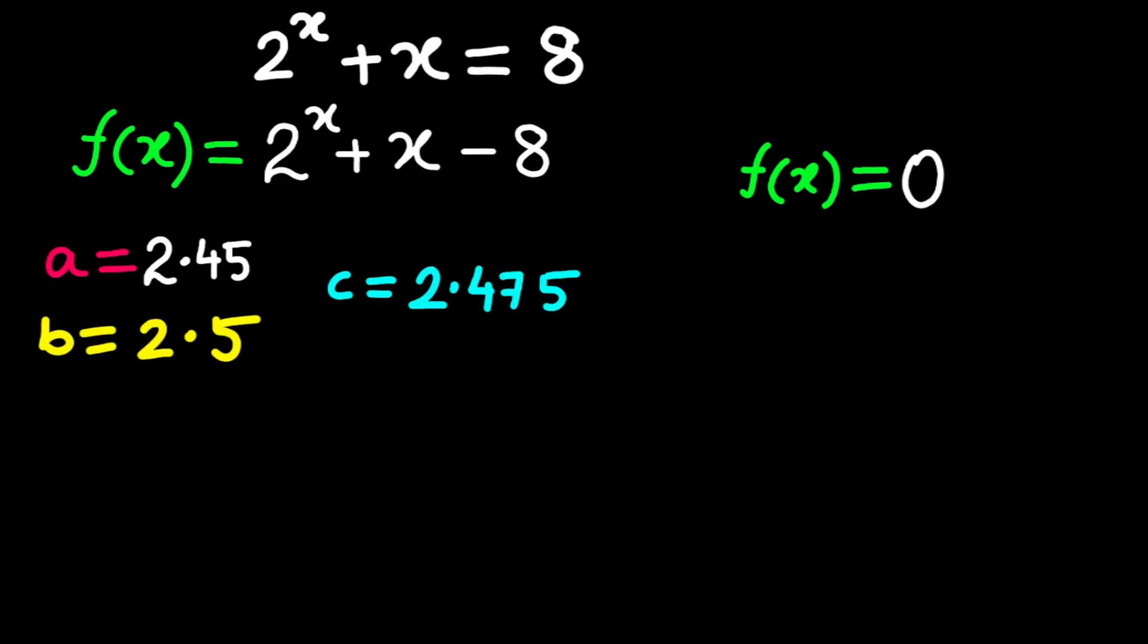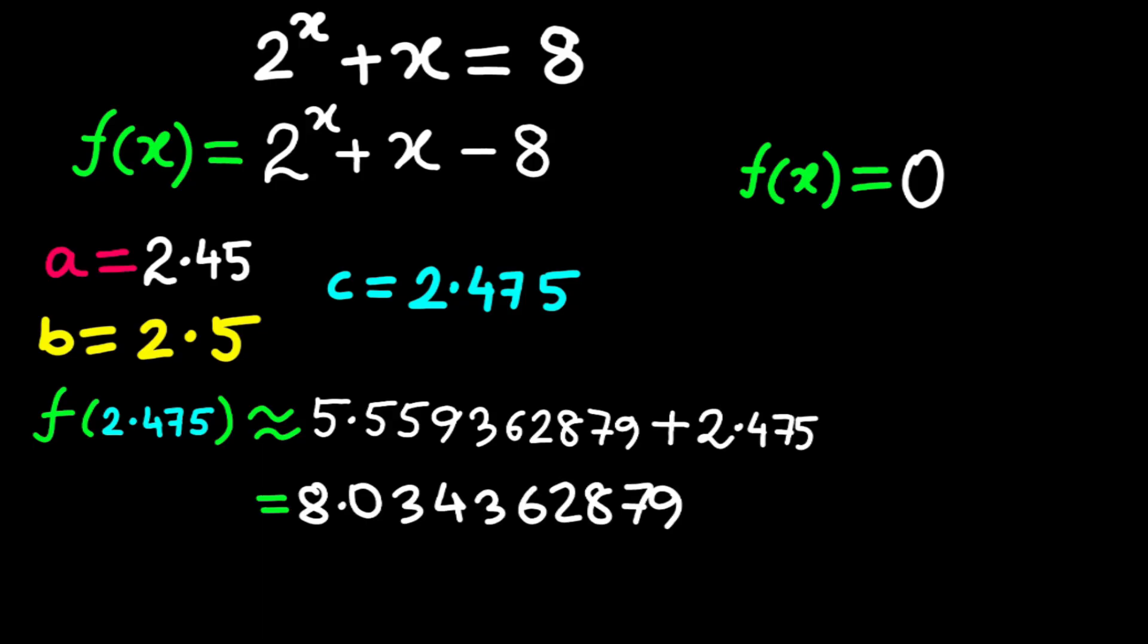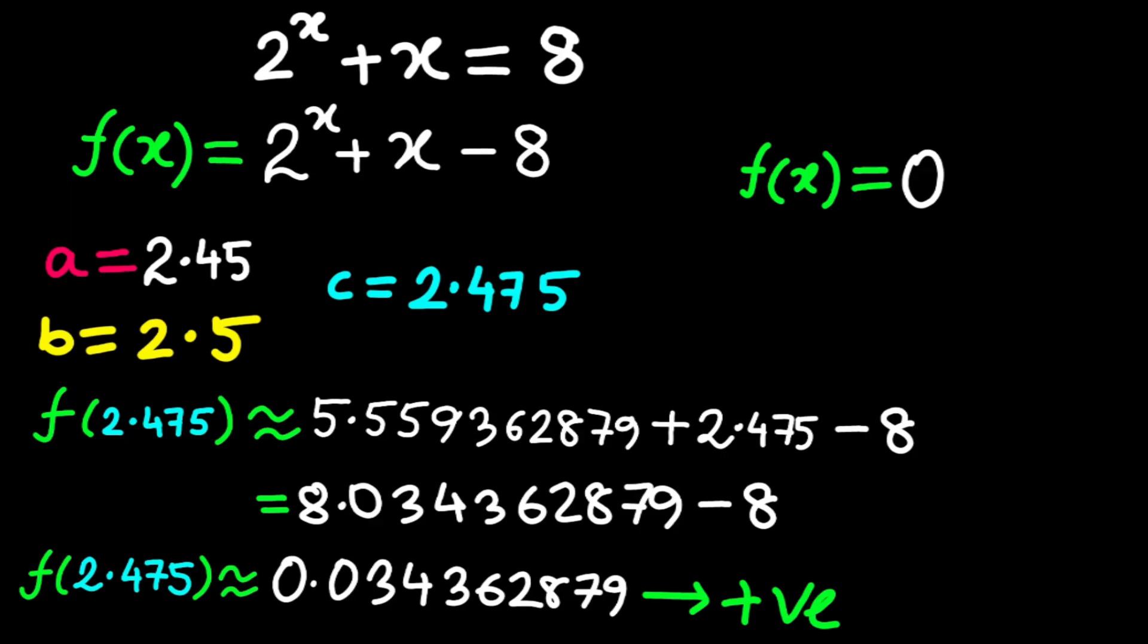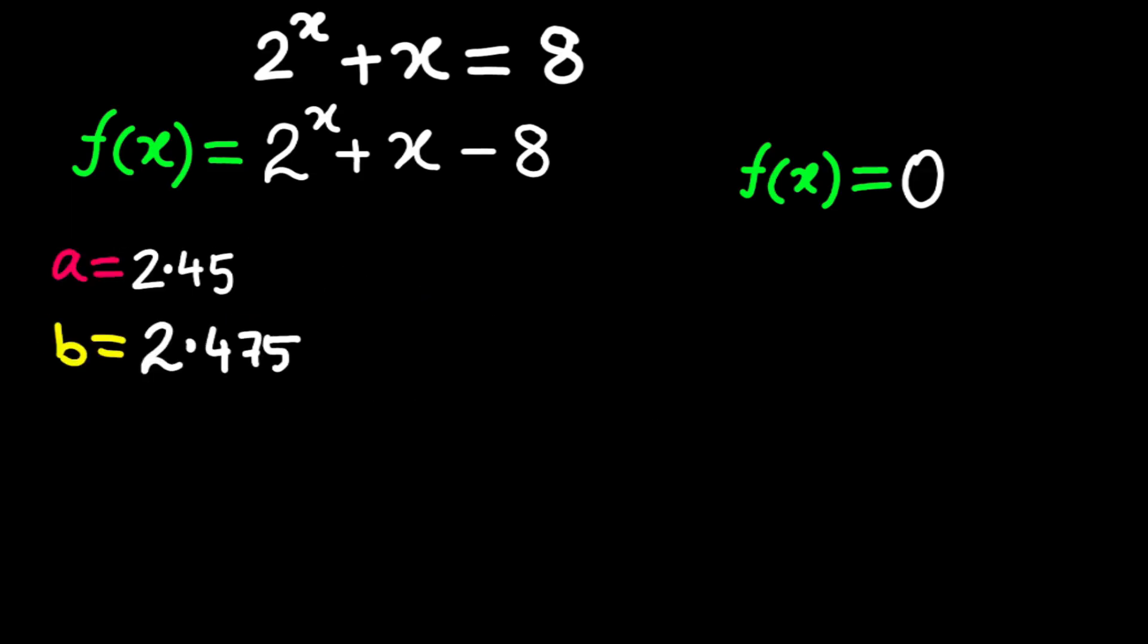The midpoint, 2.475. f of 2.475 is approximately 5.559362879. Add 2.475, which is about 8.034362879. Subtract 8, f of 2.475 is approximately 0.034362879. Positive, so the root is to the left. New interval, 2.45 to 2.475.